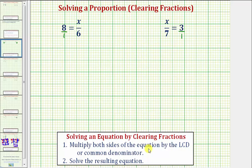But notice in these two proportions, because there's only one denominator, it makes determining the least common denominator very easy. In our first equation, because we only have a denominator of six, six is the least common denominator. So to clear the fractions from the equation, we multiply both sides of the equation by six.